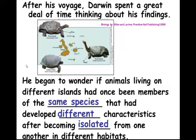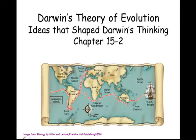As Darwin traveled on his journey, he was collecting evidence and writing things down. Then he went back to England and started thinking about all the things he saw. Now we're going to watch a little movie about Darwin and see what happened to him after he came back from his journey.